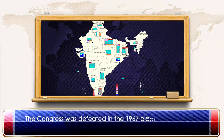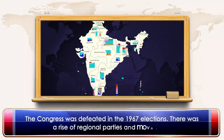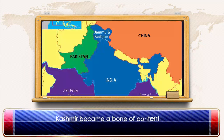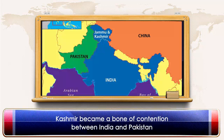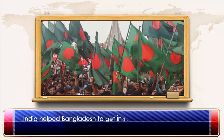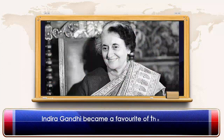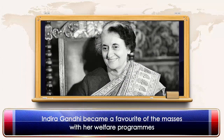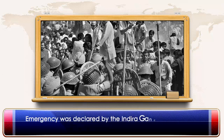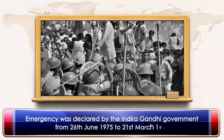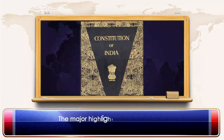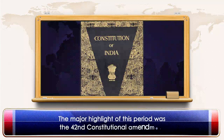The Congress was defeated in the 1967 elections, and there was a rise in regional parties and movements. Kashmir became a bone of contention between India and Pakistan. India helped Bangladesh gain independence from Pakistan. Indira Gandhi became a favourite for the masses with her welfare programmes. Emergency was declared by the Indira Gandhi government from 26th June 1975 to 21st March 1977, with the major highlight being the 42nd Constitutional Amendment.